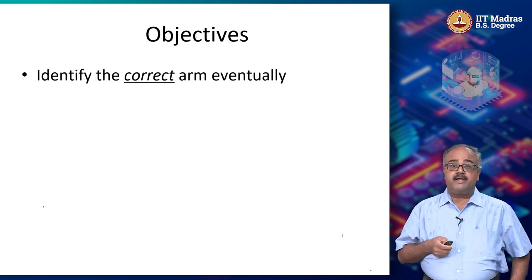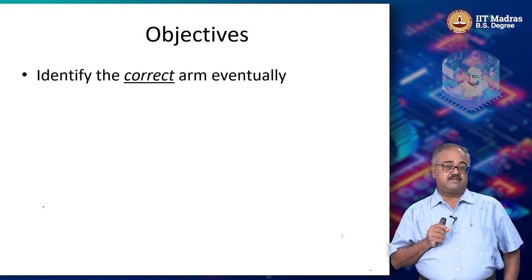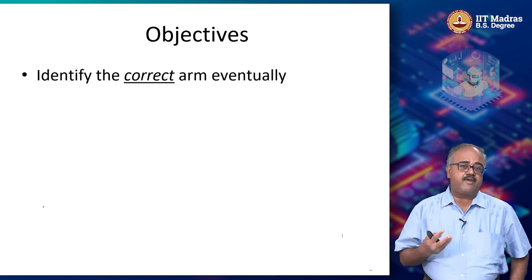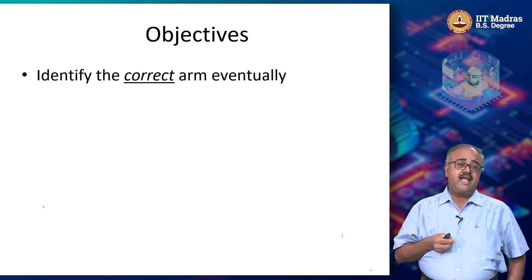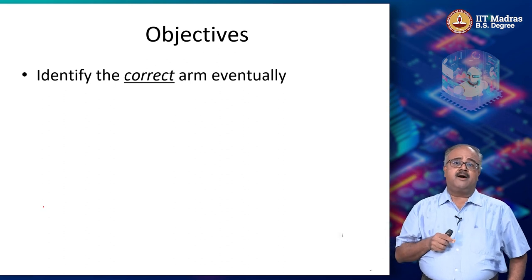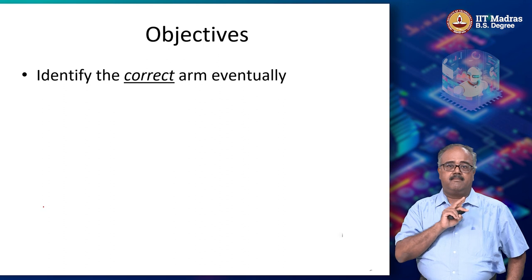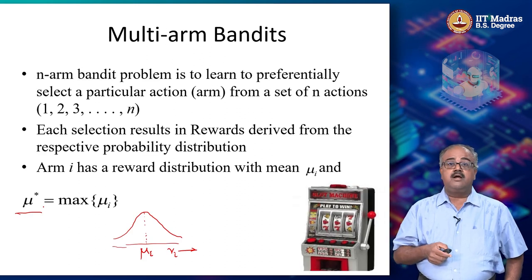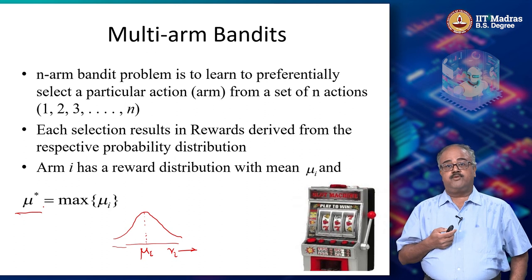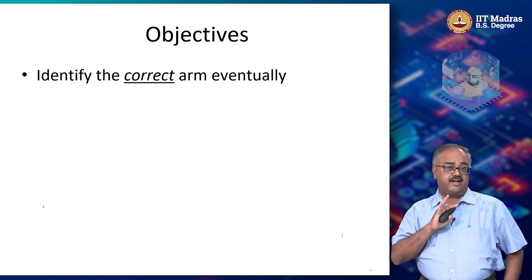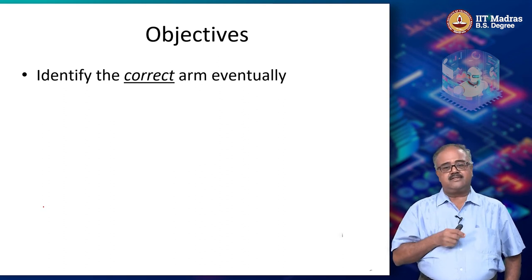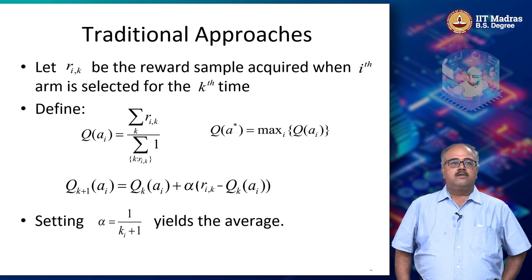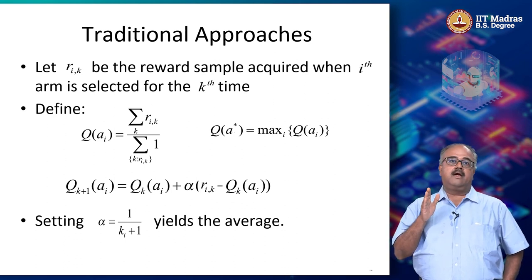Your objective — and there are many ways to formulate this problem — the most popular and oldest way is to say that eventually I need to identify the arm with the highest reward, which is the arm corresponding to mu_star. It is okay if you get there eventually; I do not need other guarantees, just keep doing this for a long time and eventually get there. So we are looking to identify the correct arm eventually.